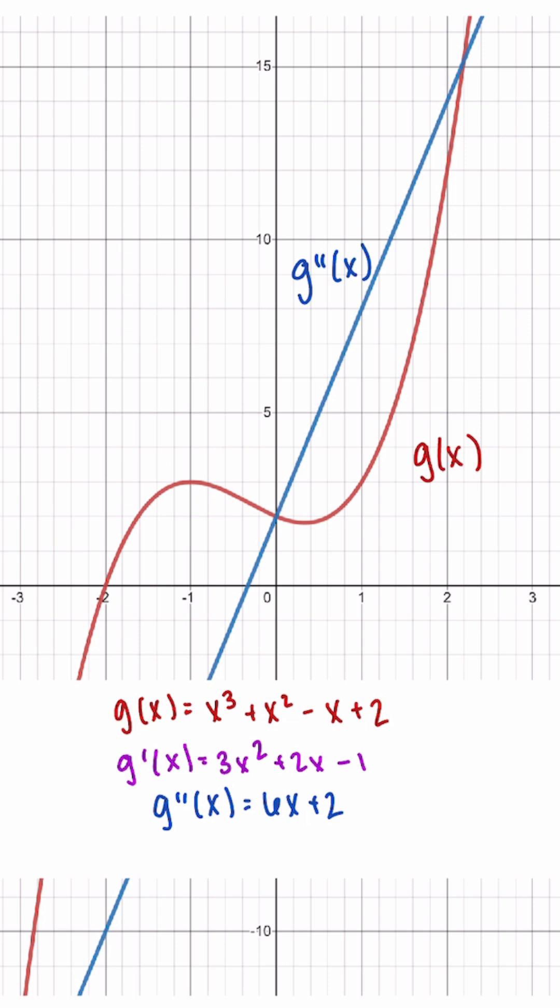In order to solve for concavity, we need to set the second derivative equal to 0. When we find our corresponding x values, these are called the points of inflection.